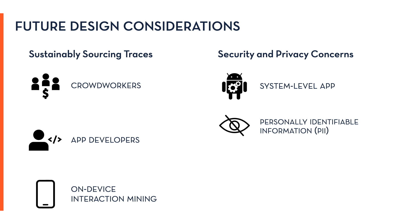However, this solution would not be applicable for a potential on-device mining system that records interactions from real users. An ideal solution would be to process UI screens when first recorded to automatically detect and remove PII. Current automated methods would only cover conventional PII like social security numbers, email addresses, and phone numbers. Further research is required to develop user-centered privacy models that identify sensitive information beyond conventional PII. In the future, on-device mining systems could expose interfaces where end users can redact sensitive information from their personal traces.